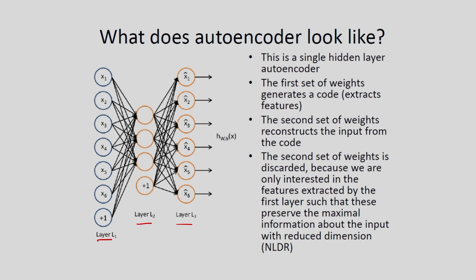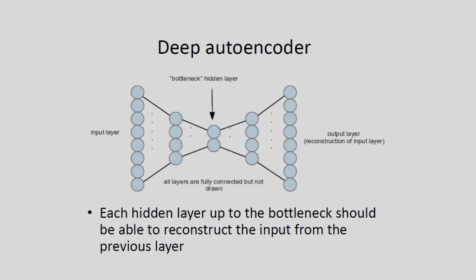From the compressed representation, using the second part of the network — the connections between the hidden layer and the output layer — I can reconstruct the original input. Perfect reconstruction is not possible, but the original image can be approximately reconstructed. The first phase of the network is the encoder and the second phase is the decoder. In a deep autoencoder, instead of one hidden layer, we consider multiple hidden layers between the input layer and output layer. The central hidden layer is called the bottleneck layer.